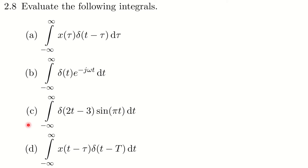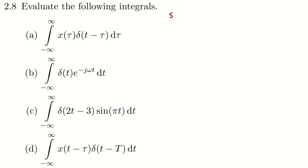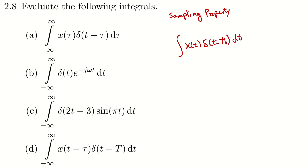This is question 2.8. We have four integrals to evaluate. These integrals are products of a signal like x(t) or x(t-a) and a delta function — a time-shifted delta function, a plain delta function, a shifted and time-scaled delta function, and another shifted delta function. We're going to use a property called the sampling property or sifting property, which says that the integral of x(t)·δ(t−t₀) dt simply equals x(t₀).